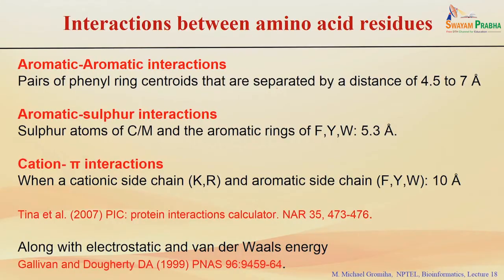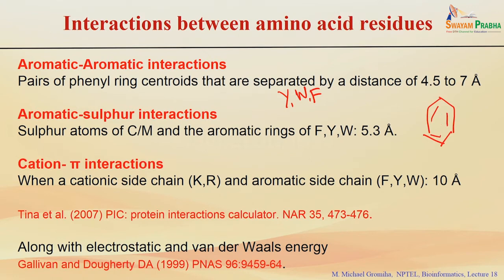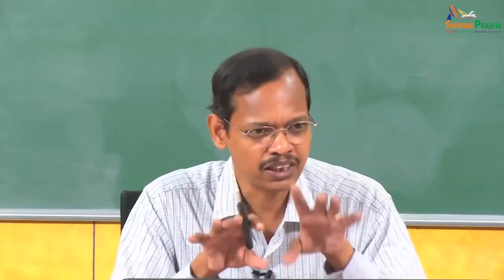Likewise, you can see aromatic-aromatic interactions. What are the aromatic rings in protein structures? Tyrosine, tryptophan, and phenylalanine. You can see the centroid of the phenyl ring — get the coordinates for all the carbon atoms in the ring and calculate the average, similar to a center of mass. Then check the distance between different ring centroids: if the distance is 4 to 4.5–7 Ångström, then these two residues are involved in aromatic-aromatic interactions.